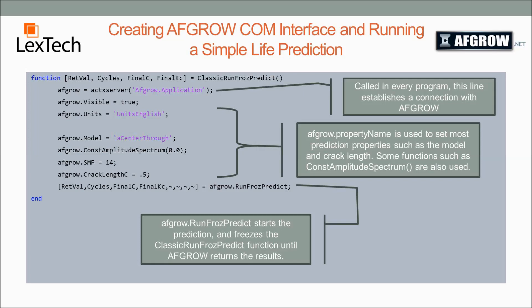Next we set the AFGRO units to English. Set these to metric if you want to use metric units. AFGRO.model is a center through. I do this to demonstrate that it's actually the default model, but I set it here to demonstrate how you would change the model if you wanted to. Then we have AFGRO.constAmplitudeSpectrum. All this does is set the spectrum to a constant amplitude spectrum. I set the stress multiplication factor to 14, and then set the initial crack length in the C direction to 0.5.